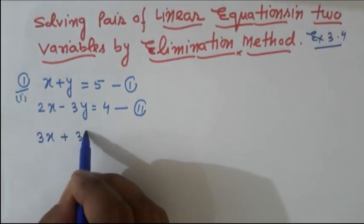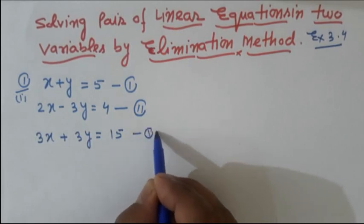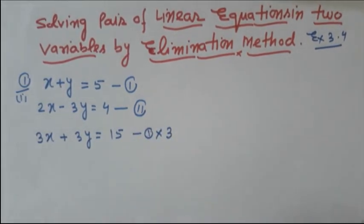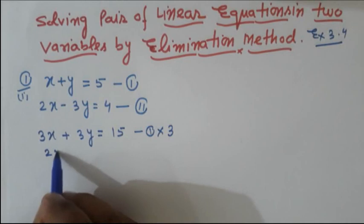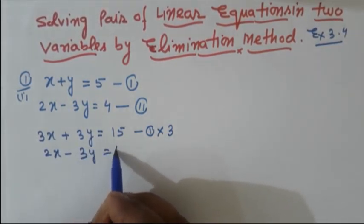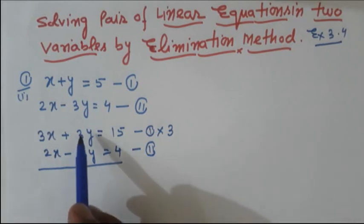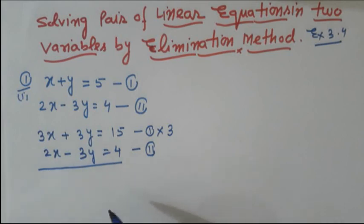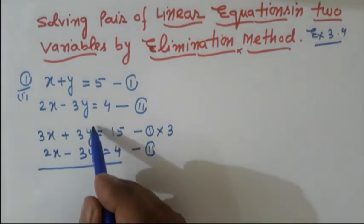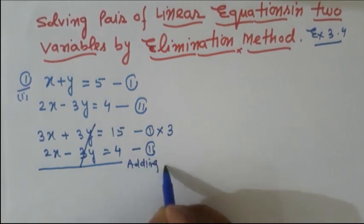Multiplying equation one by 3 gives: 3x plus 3y is equal to 15. The second equation is 2x minus 3y is equal to 4. We need to cancel the 3y terms. Since we have plus 3y and minus 3y, the signs are already different, so these will be cancelled by adding the equations.